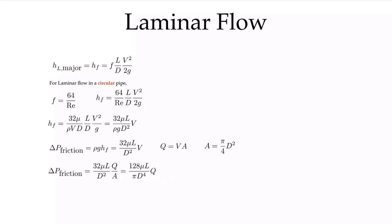That's the story for laminar flow. The important equation in terms of the friction factor, which we'll use for our calculations, is that f equals 64 over the Reynolds number for laminar flow.